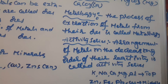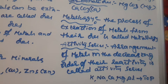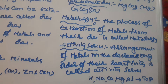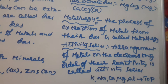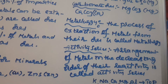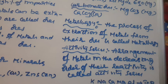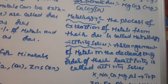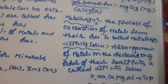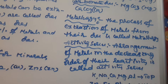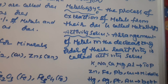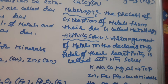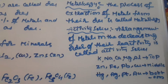Metals are highly reactive, which is why they are not available in pure form in nature. However, all metals do not react with other elements at the same speed — metals participate in chemical reactions with different speeds. Using this concept, metals are arranged in the activity series. The arrangement of metals in the decreasing order of reactivity is called the activity series.